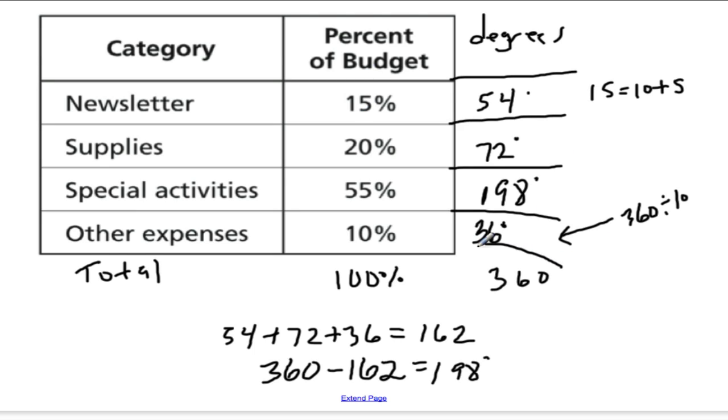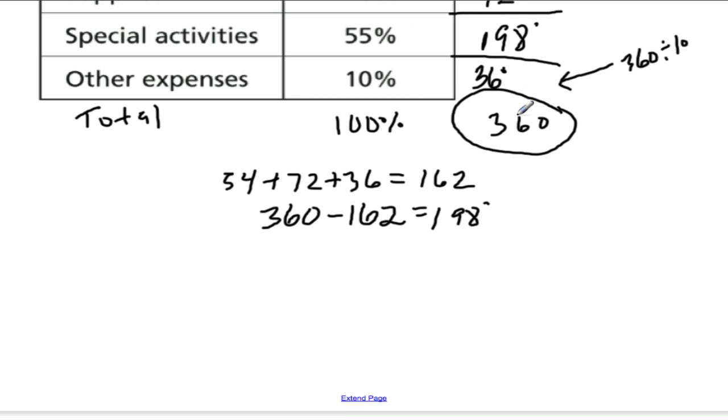So once we check that they all equal 360 degrees, we're ready to move forward. Another technique I could have used, instead of the one I did here, was to use proportions, which may seem difficult, but in fact is very helpful for more complicated percents.